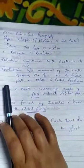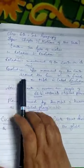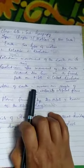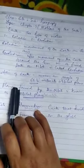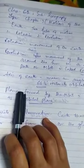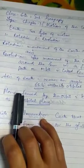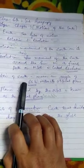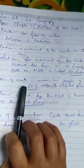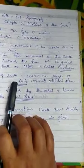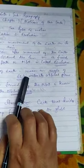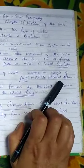The axis of the earth is an imaginary line. It is at an angle which I have written here, 66½ degrees with its orbital plane.